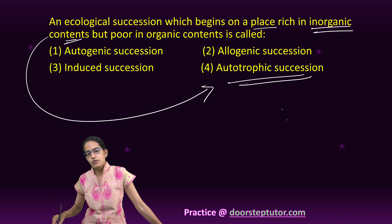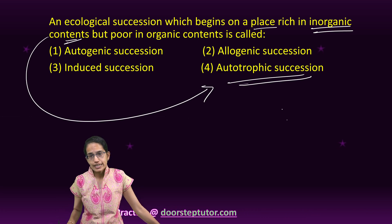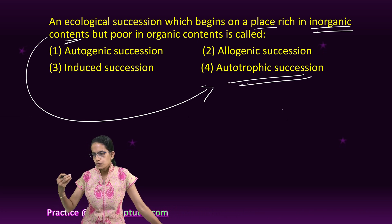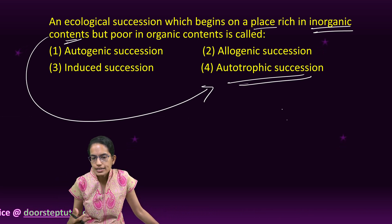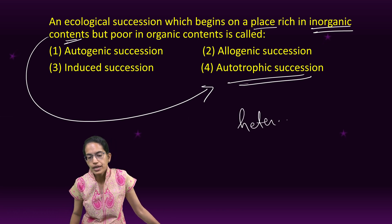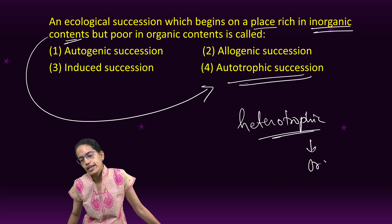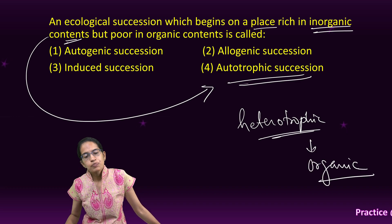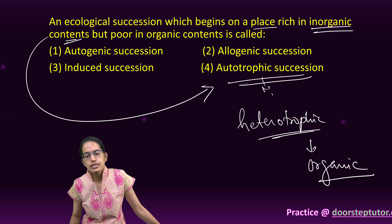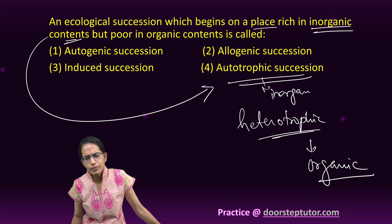When it is heterotropic, it would be rich in organic content - bacteria, viruses, fungi. So if it is heterotropic, that means it is rich in organic content. If it is heterotropic, it is rich in organic content, as simple as that. So the basic things if you remember, you should be able to attempt the question.